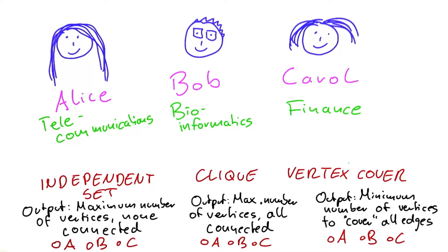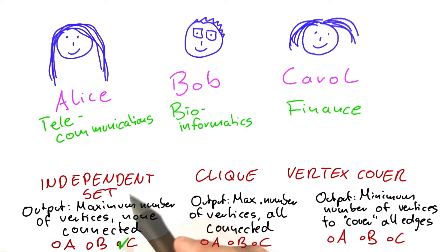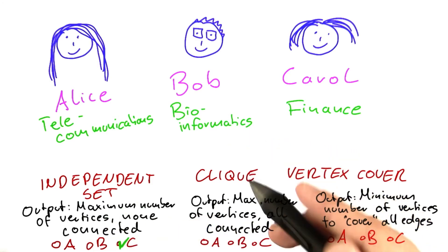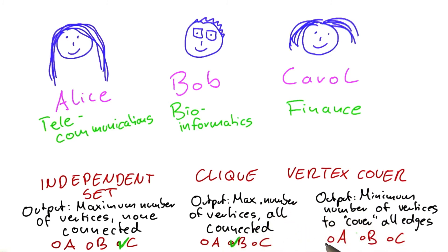The correct answer is that Carol was working on Independent Set because she had to find a number of investment opportunities that were independent of each other. Bob was working on Clique because he was trying to find clusters of genes that are showing similar expression patterns or similar behaviors.